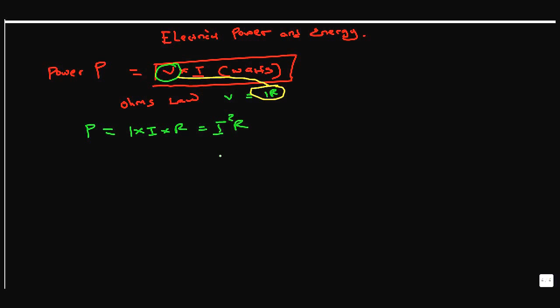This is another formula for electrical power. You might be given the current and the resistance and told to work out power using P = I²R, or given the voltage and the current and use P = VI.